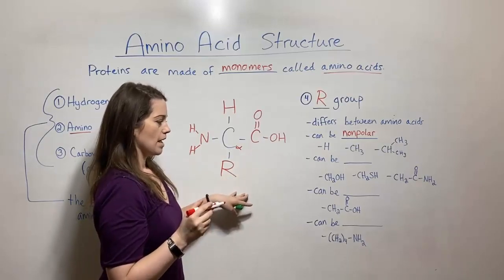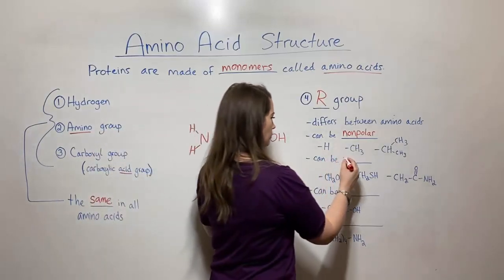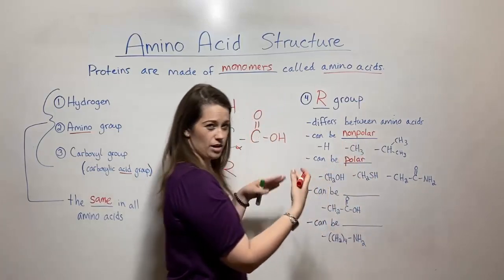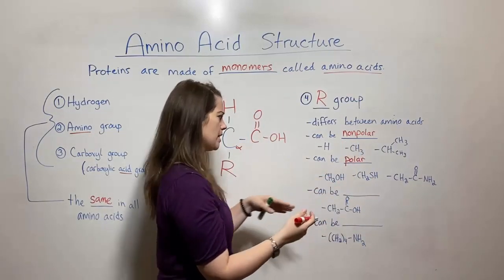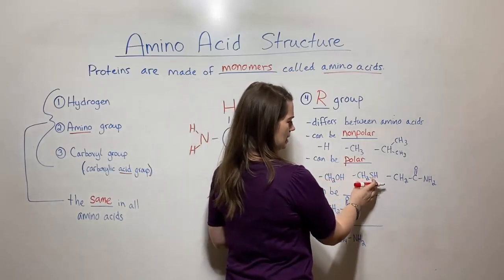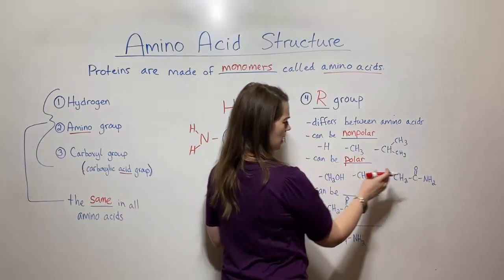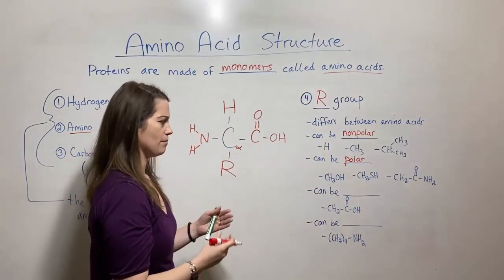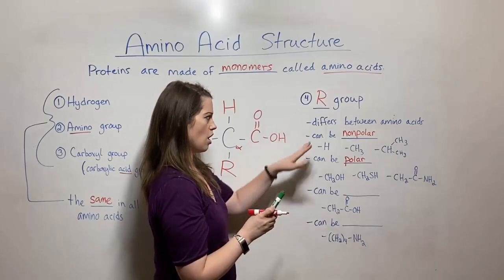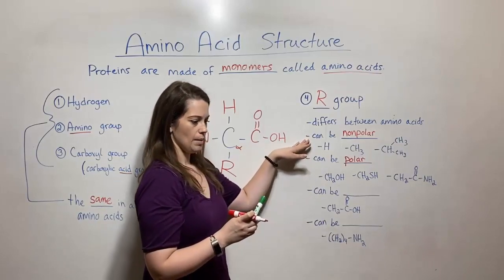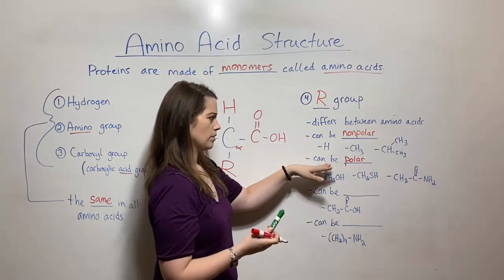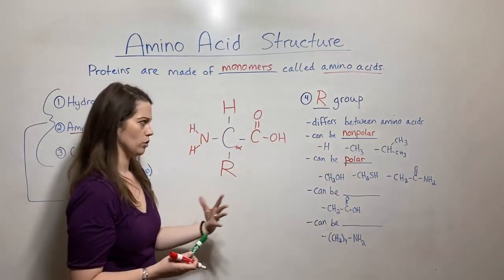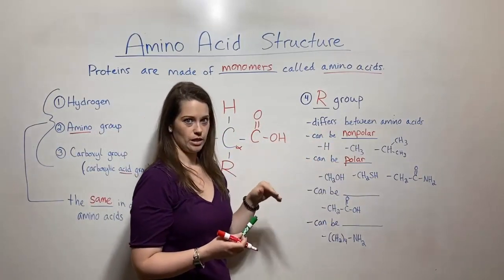Now the R group can also be polar. So in addition to being non-polar there are polar possibilities. So for example we've got serine, cysteine, I believe that's asparagine, and they are polar R groups so they have polar characteristics. Just like the non-polar ones would be hydrophobic, the polar ones are going to be hydrophilic. These amino acids will take on the characteristics of their particular R group.